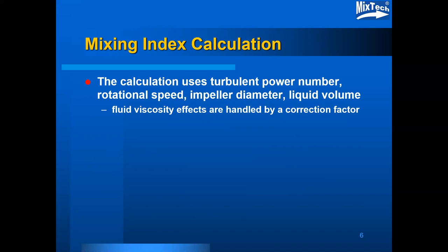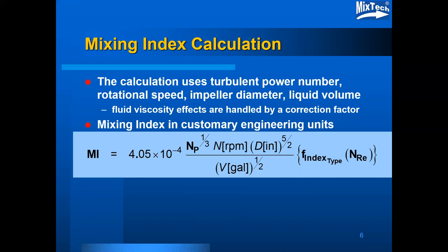The mixing index in customary engineering units is a coefficient of 4.05 times 10 to the minus fourth, times the impeller power number to the one-third, times the rotational speed in revolutions per minute, times the impeller diameter in inches to the five-halves, divided by the square root of the volume in gallons. The total quantity is then multiplied by a correction factor for viscosity effects when appropriate.